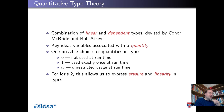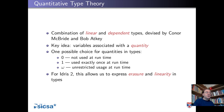A valuable thing about this is it allows us to express erasure — that is, we can say exactly what is used at runtime and what isn't. That's actually been a long-standing problem in dependently typed programming: to know exactly what's going to be in your final program. But more excitingly, it allows us to express protocols. We can express linearity in types, meaning not only can we say precisely what a program is supposed to do, but also precisely when it's allowed to do it.